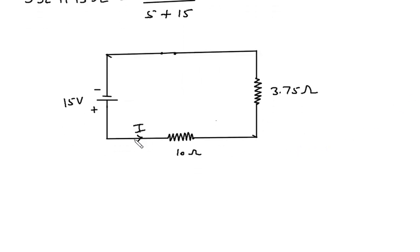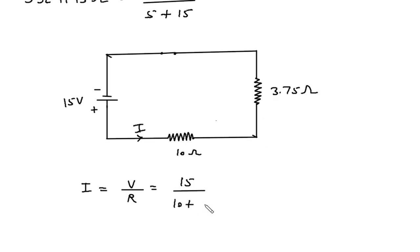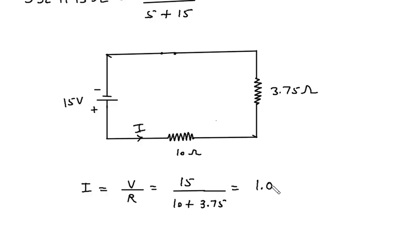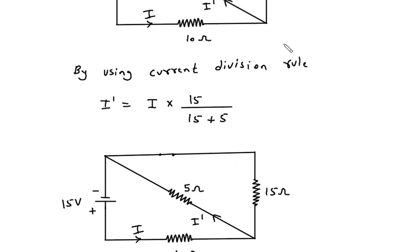Now we can easily find the value of current I using Ohm's law: I is equal to V by R. V is 15 volts and R is 10 plus 3.75 ohm. So this will be 15 divided by 13.75, which gives 1.09 ampere as the value of total current I. But we have to find I prime.